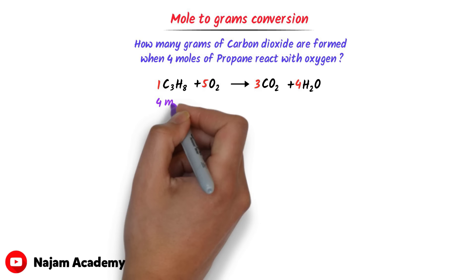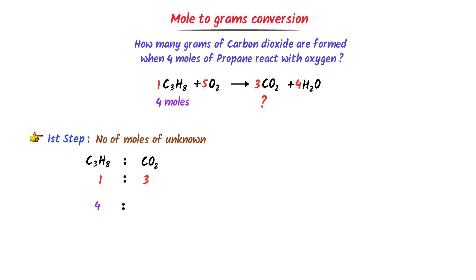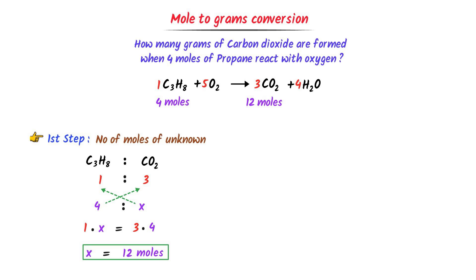4 moles of propane will react with oxygen to form X grams of carbon dioxide. I solve this in two steps. In the first step, I find the number of moles of the unknown species, carbon dioxide. I establish the ratio between propane and CO₂, which is 1:3. With 4 moles of propane given, cross-multiplying: 1×x = 4×3, giving x = 12 moles of carbon dioxide.